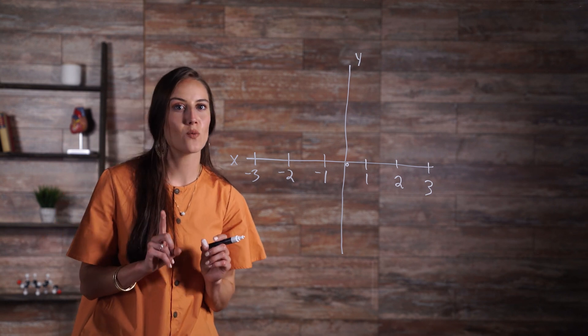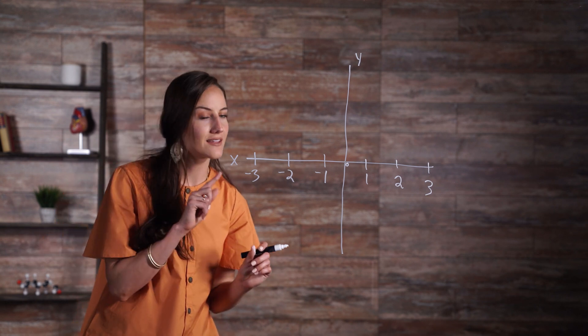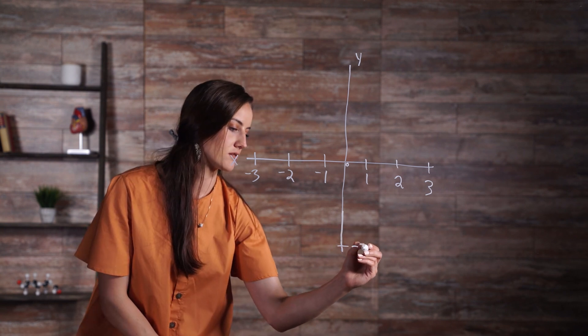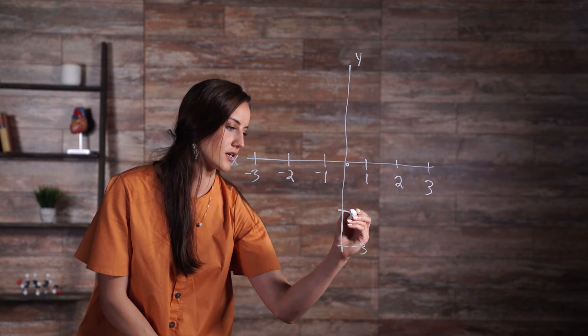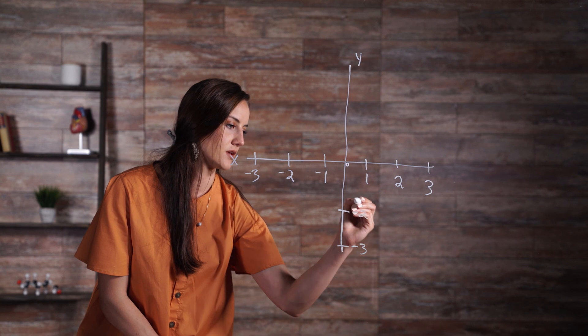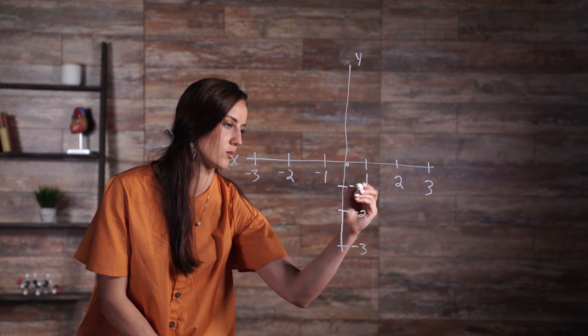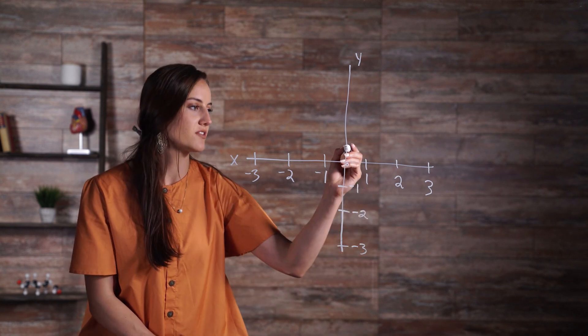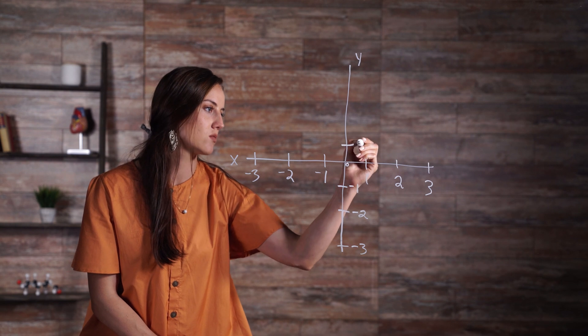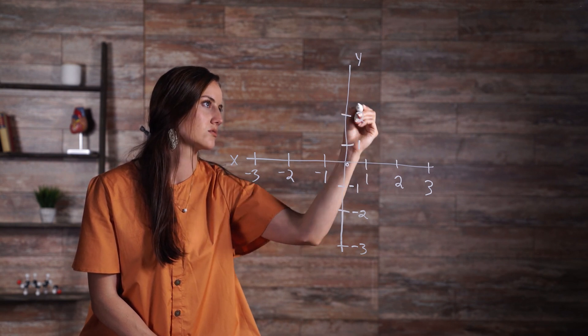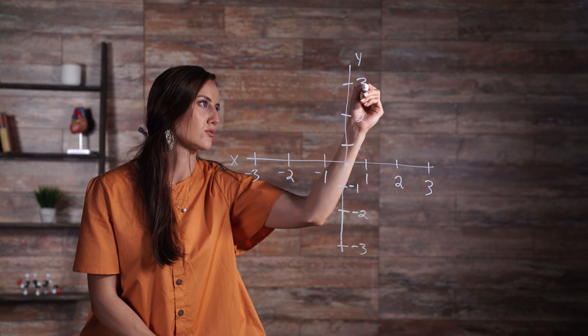We do the same thing with the y-axis, starting at the very bottom. Negative three, negative two, and negative one. Then we move above the origin, and we do one, two, and three.